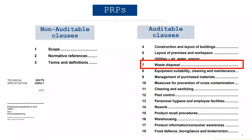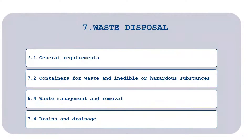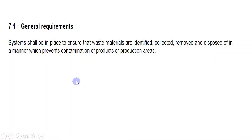Today I'm going to describe PRP number seven, which is waste disposal. If any of you have not seen my previous videos, please go back to my channel and see them. In waste disposal there are total four sub-clauses: general requirement, containers for waste and inedible or hazardous substances, waste management and removal, and fourth is drains and drainage.